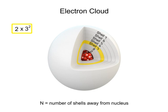For the third, 2 times 3 squared, or 2 times 9, equals 18 electrons.